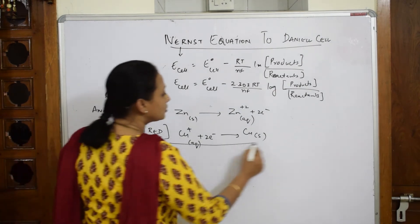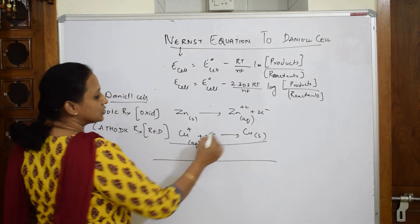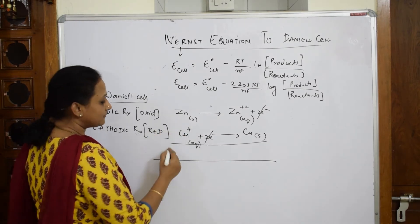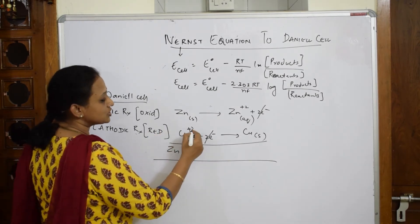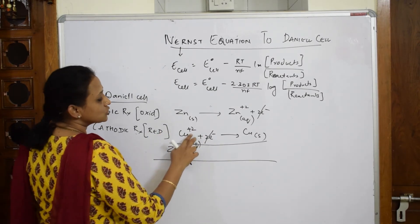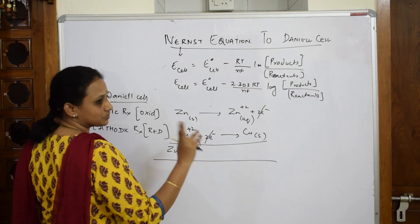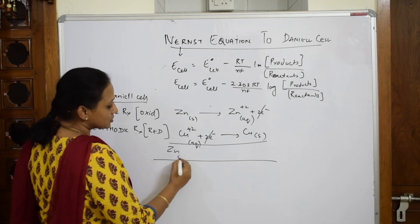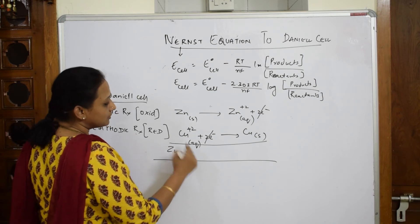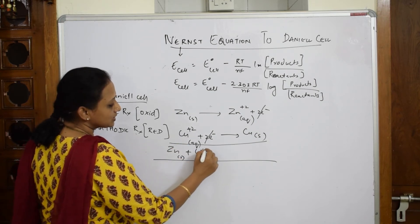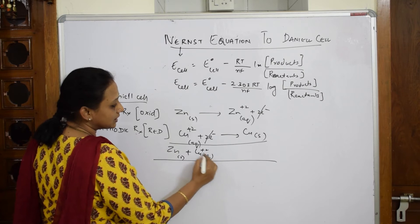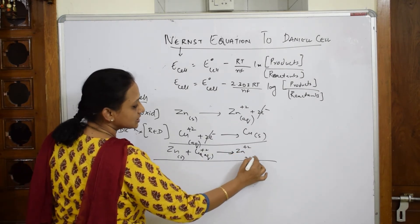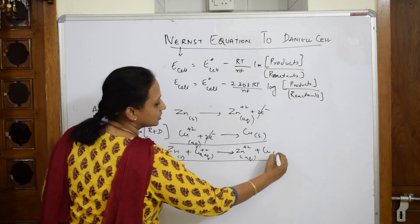Writing the overall reaction — the two electrons cancel. We have Zn(s) + Cu²⁺(aq) → Zn²⁺(aq) + Cu(s). Note: Cu²⁺ carries a 2+ charge, so one zinc reacts with one Cu²⁺.